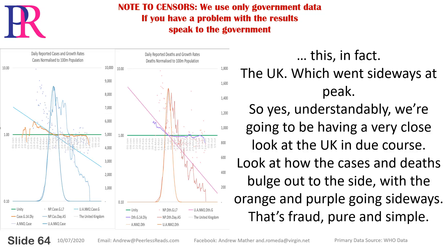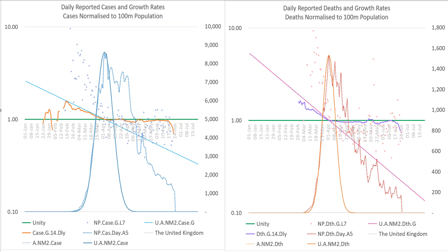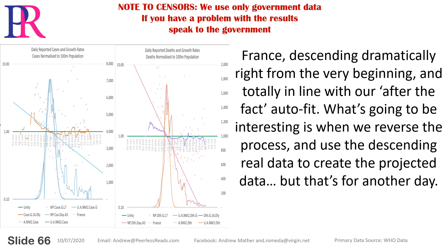This, in fact: the UK, which went sideways at peak. Understandably, we're going to be having a very close look at the UK in due course. Look at how the cases and deaths bulge out to the side, with the orange and purple going sideways. That's fraud, pure and simple. France, descending dramatically right from the very beginning and totally in line with our after-the-fact autofit. What's going to be interesting is when we reverse the process and use the descending real data to create the projected data — but that's for another day.